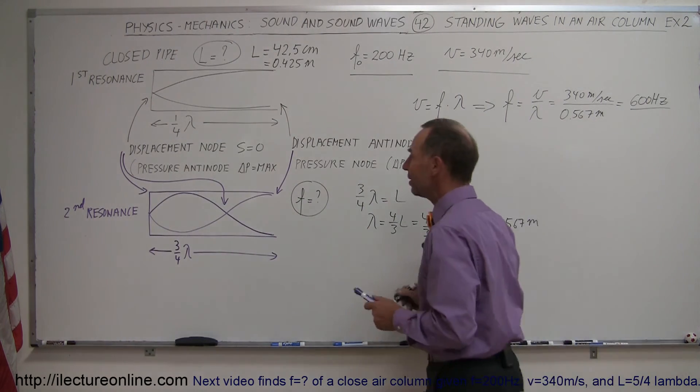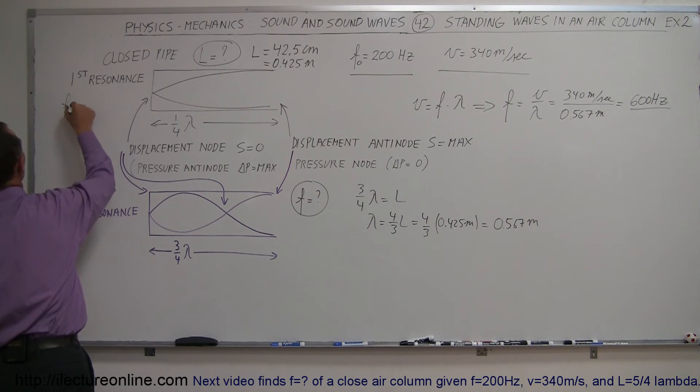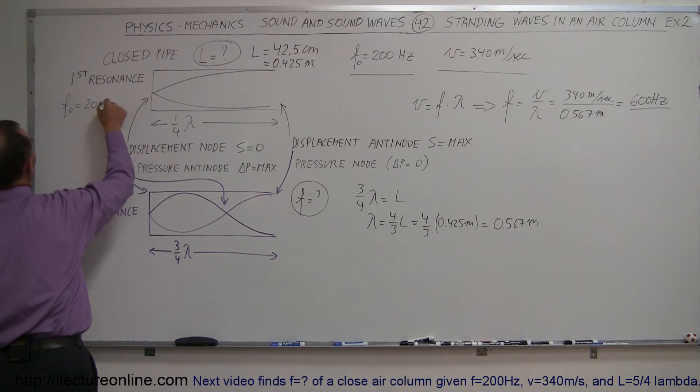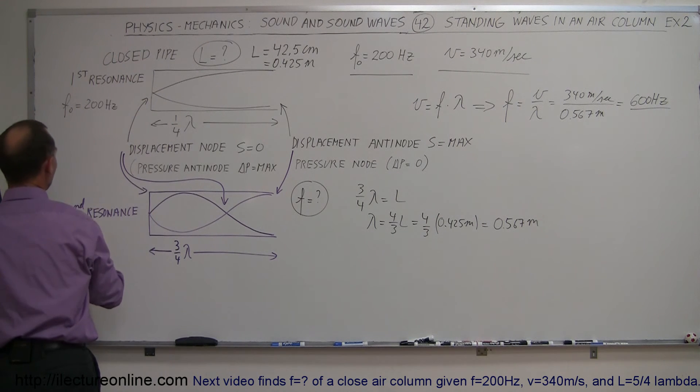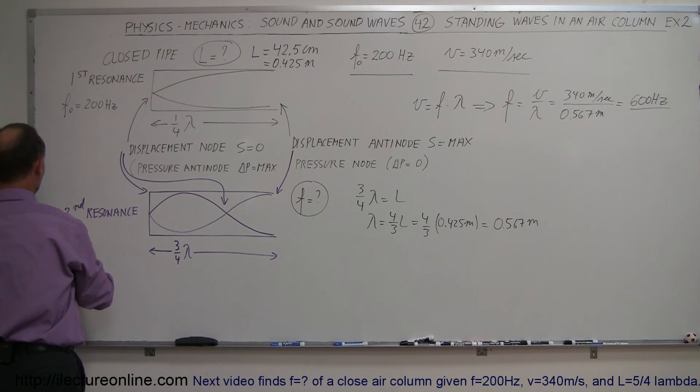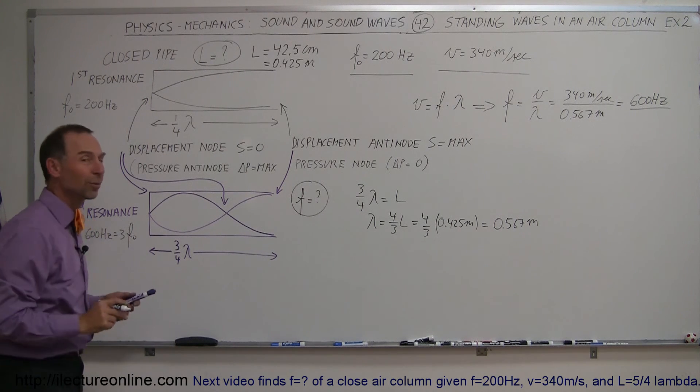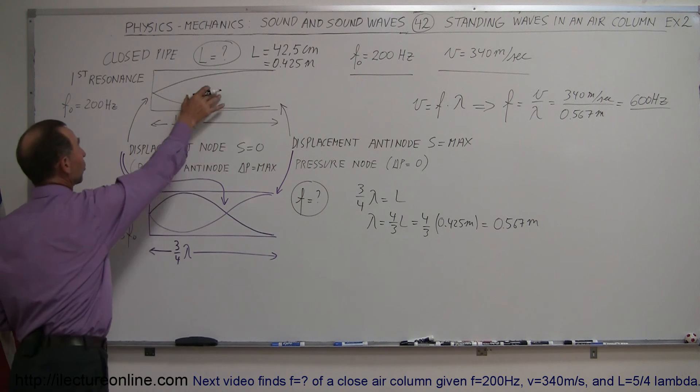So that means the second resonance, the first resonance was at the base frequency of 200 Hertz, and the second resonance is 600 Hertz. So F, the second resonance, is equal to 600 Hertz, which is equal to three times the original base frequency of the standing wave when we have this situation.